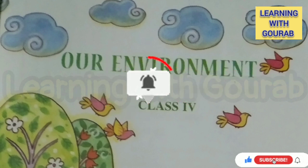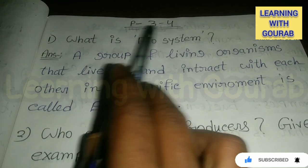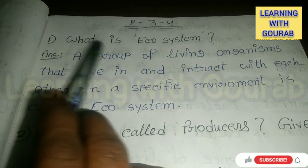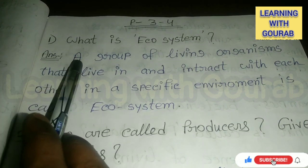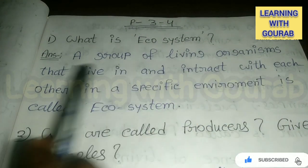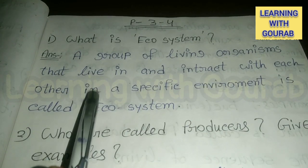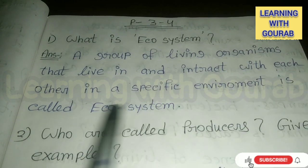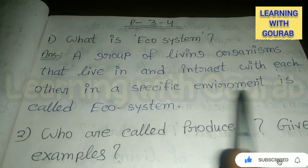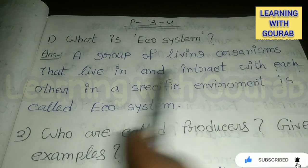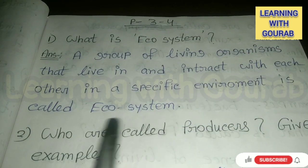Let's start the video. Class 4, Our Environment, page number 3 to 4. First question: What is ecosystem? Answer: A group of living organisms that live in and interact with each other in a specific environment is called an ecosystem. Remember, when living organisms live in a specific environment and interact with each other, that is called an ecosystem.